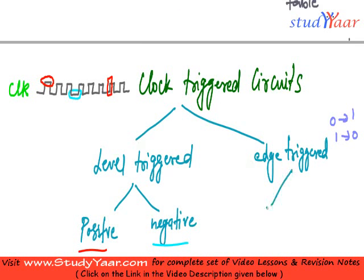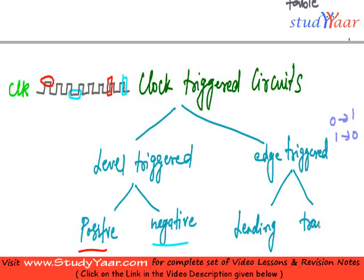This is leading edge-triggered, and your transition from 1 to 0 is called trailing edge-triggered. This is your trailing edge-triggered circuit. It is represented by one color and leading edge is represented by another color.